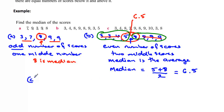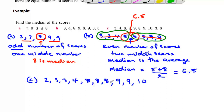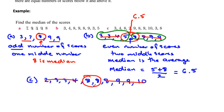Let's have a look at example C. Are they in order? 3, 4, 8, 2 — no they're not. So in order they go: 2, 3, 3, 4, then there are three 8s, and a 9, a 9, and a 10. Let's count them: 1, 2, 3, 4, 5, 6, 7, 8, 9, 10. Even number, so there are going to be 2 middle scores. Knock off 4 scores from each end — there are our 2 numbers, and you can see straight away that the average of those 2 numbers must be 8. So the median is equal to 8 in this situation. If they're the same, the average is going to be the same number.